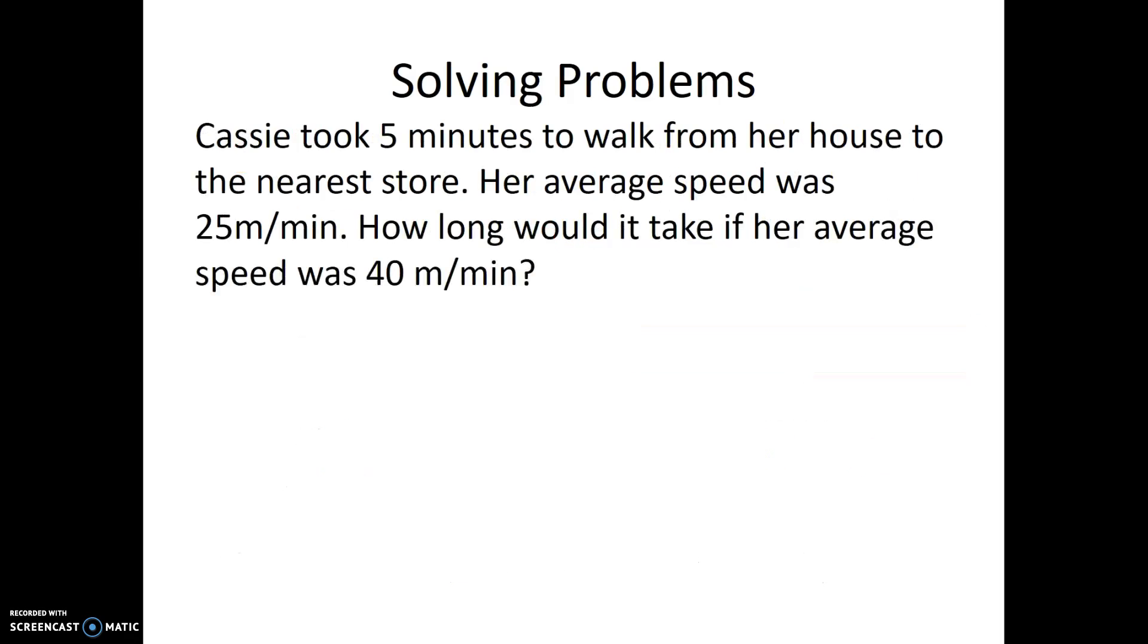Let's do number 10 together. Cassie took five minutes to walk from her house to the nearest store. Her average speed was 25 meters per minute. How long would it take if her average speed was 40 meters per minute? This time we have two different speeds. We don't know the distance yet, but we can find it out. So there's our time one—Cassie took five minutes to walk from her house to the nearest store at 25 meters per minute. There's our speed one.